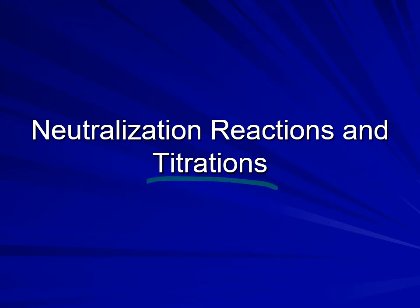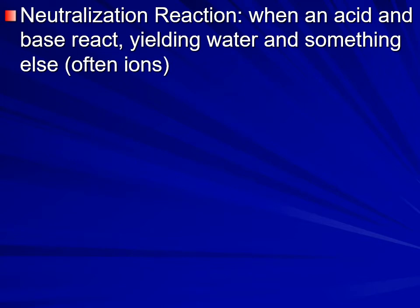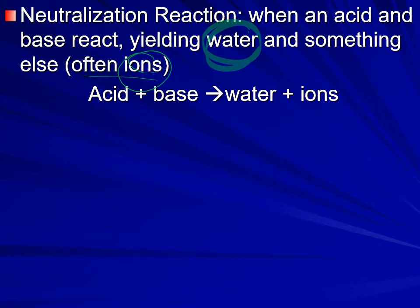Neutralization reactions occur when an acid and a base react together. The acid donates hydrogen ions and the base provides hydroxide ions — either by producing them from water or by containing them directly. These hydrogen ions and hydroxide ions combine to produce water. Whatever other ions are left over, such as from sodium hydroxide and hydrochloric acid, may remain in solution or occasionally form a molecule like carbon dioxide gas.